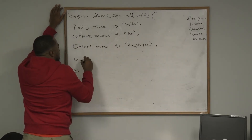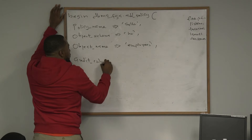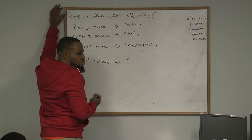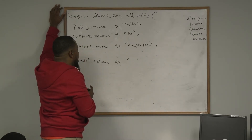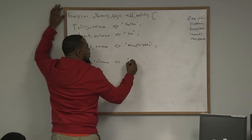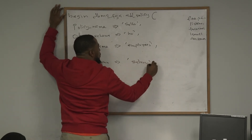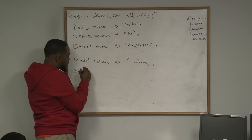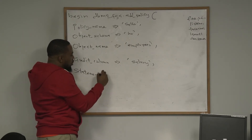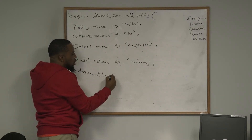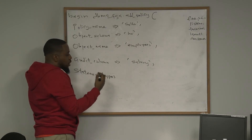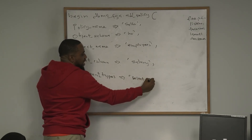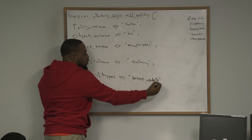Then AUDIT underscore COLUMN equals-to-greater-than — for our salary column, put SALARY. Then STATEMENT underscore TYPES equals-to-greater-than — I only want SELECT; anyone who does SELECT. You can also add UPDATE. Close the quote.